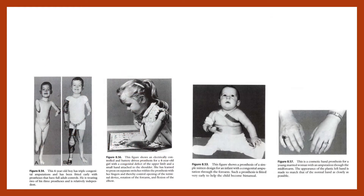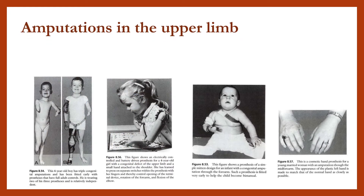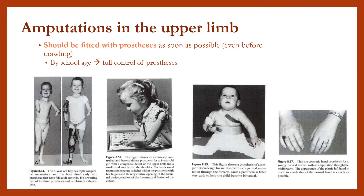Amputations in the upper limb should be fitted with a prosthesis as soon as possible — even before crawling — so that by school age the child has full control of the prosthesis, both cosmetic and powered.